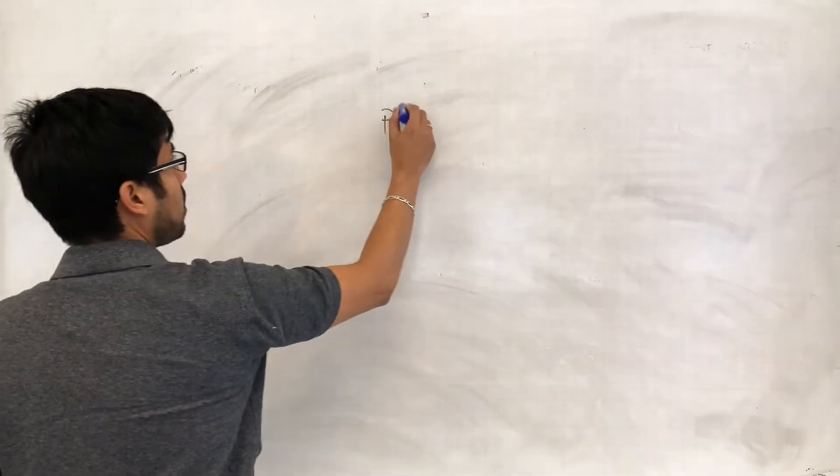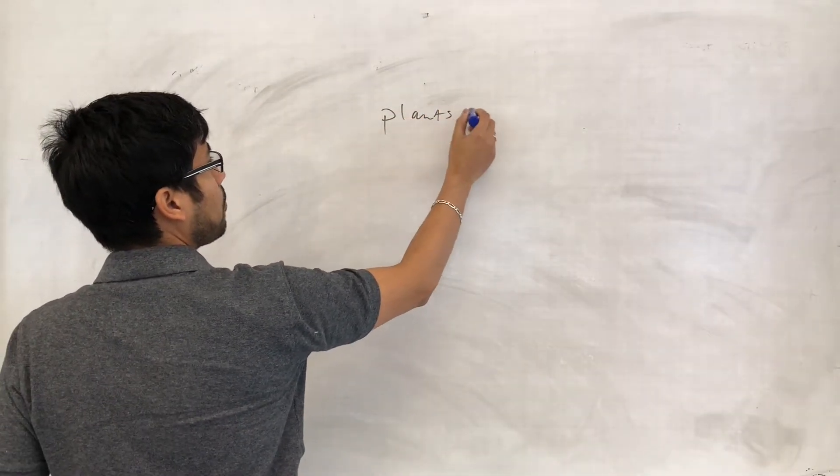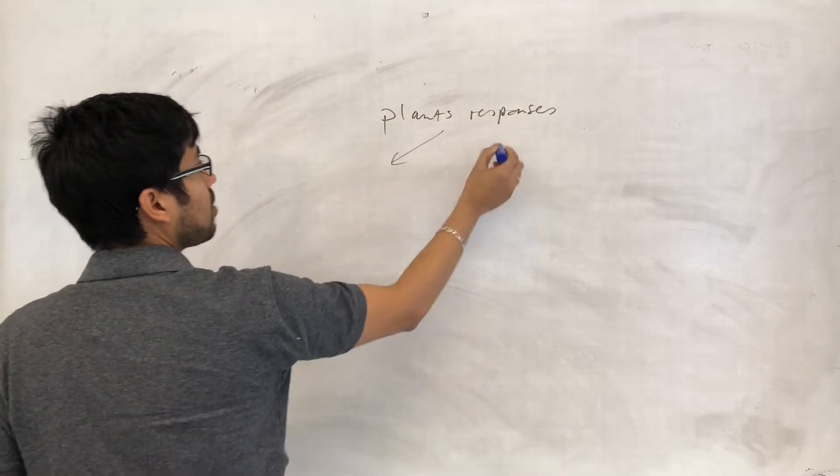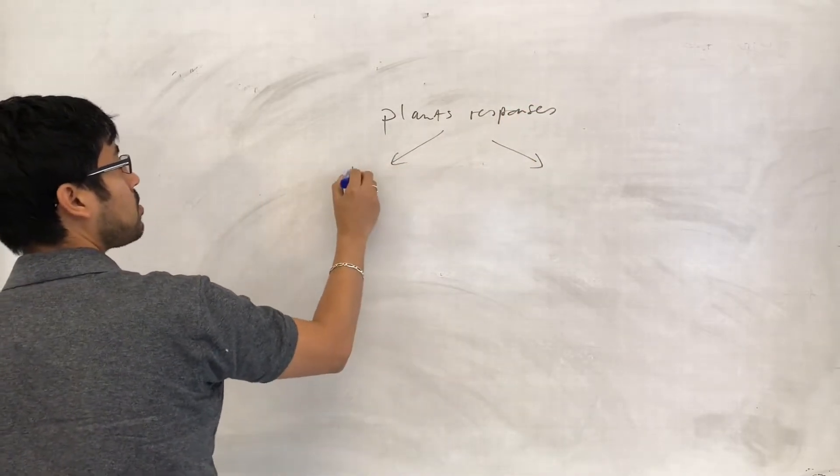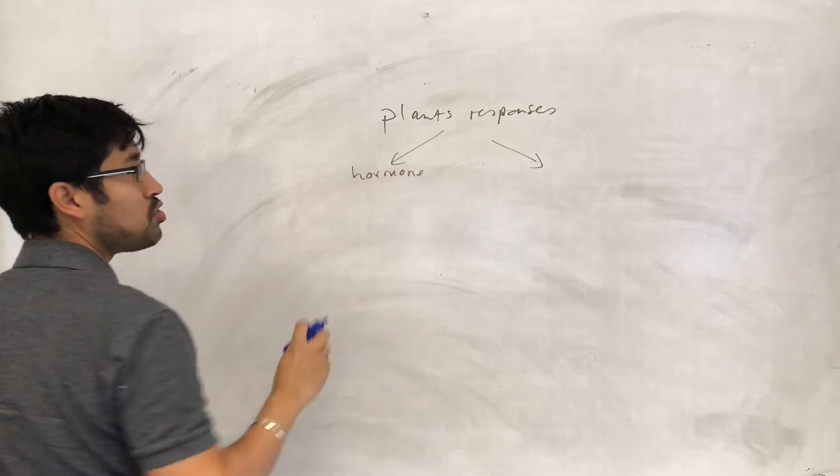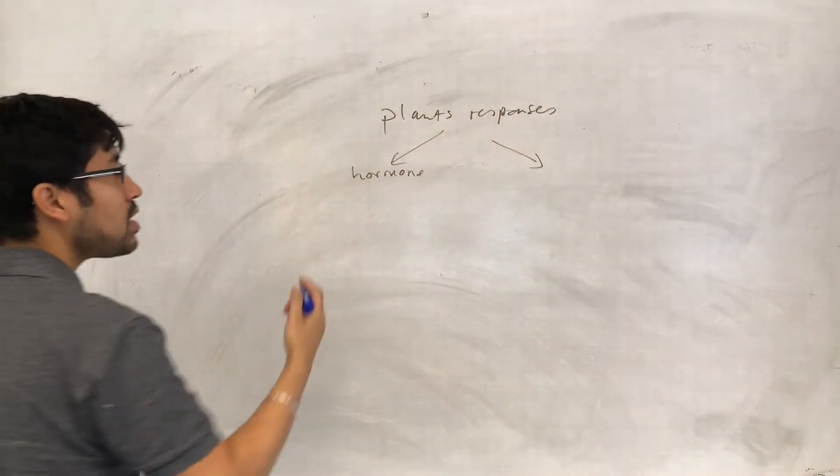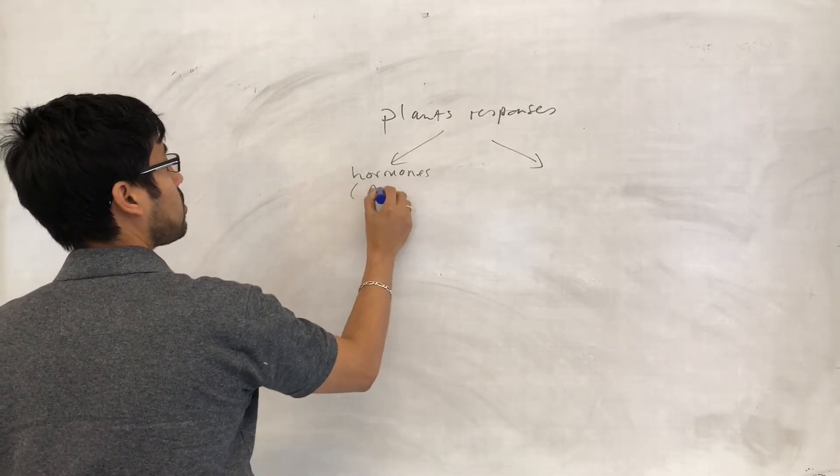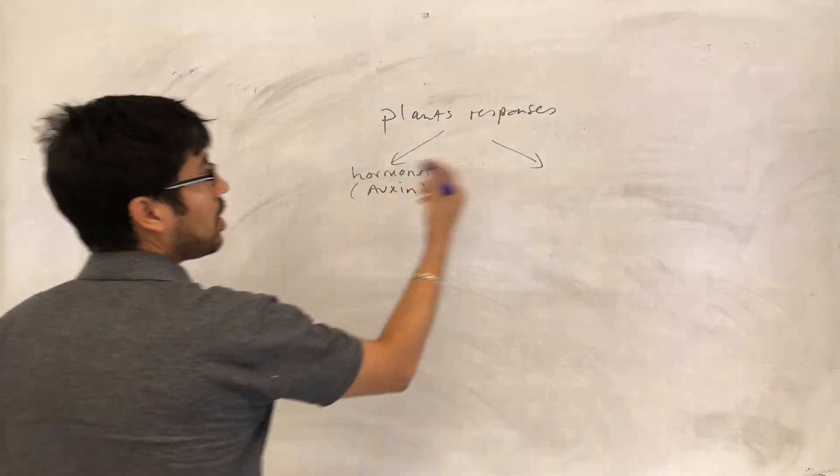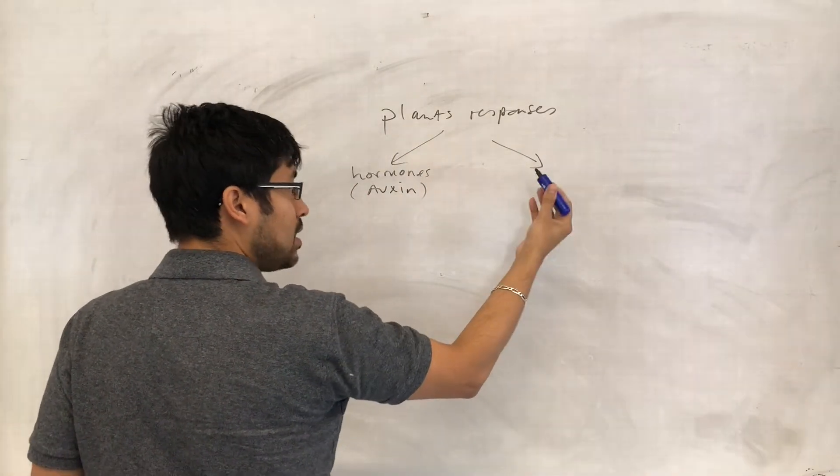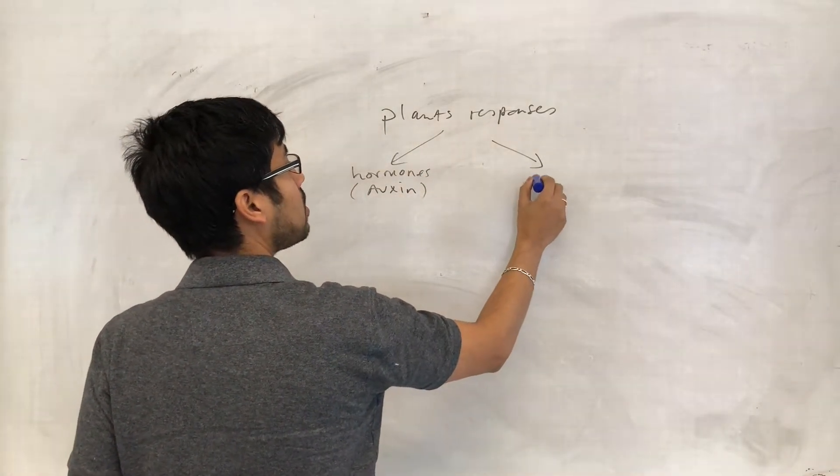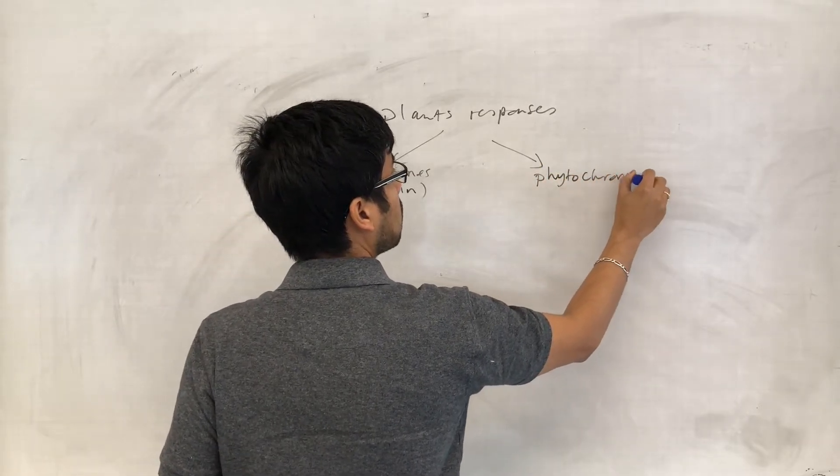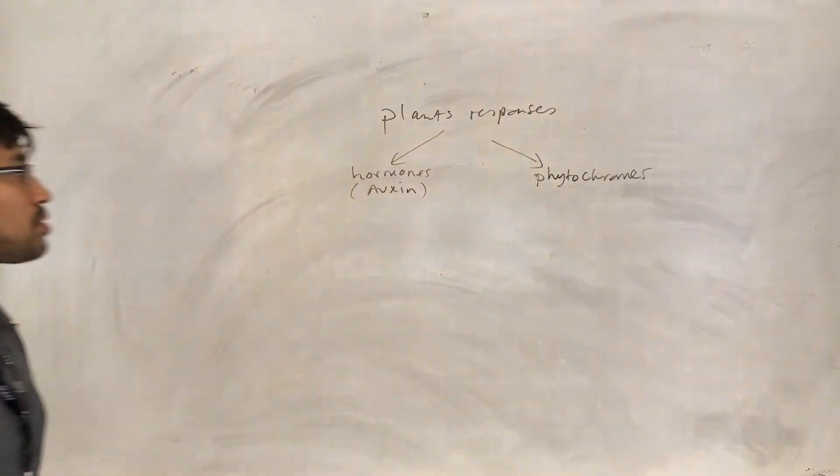Right, so finally we look at plant responses, and we said these were in two parts: the extracellular signaling molecules, plant hormones such as auxin, and the other one was inside the cell, intracellular signaling molecules called phytochromes.